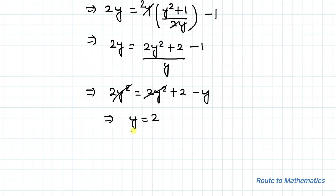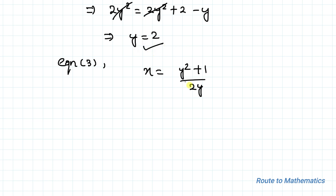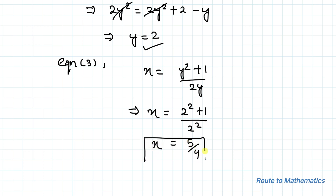Now putting y = 2 into equation 3: x = (2² + 1) / (2 × 2) = 5/4. So x = 5/4 is our answer. I hope you've understood the solution. Thanks for watching — please subscribe to my channel and click the bell icon for more such interesting videos. Thank you.